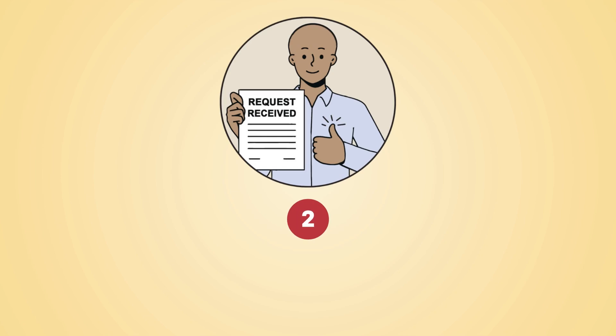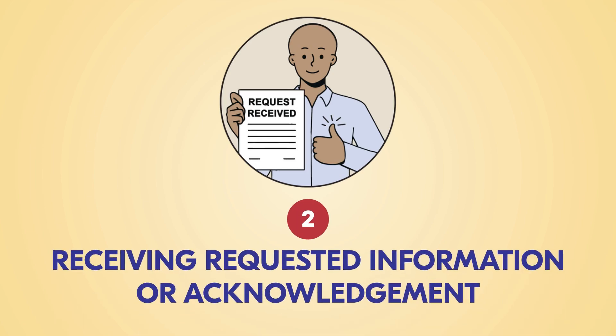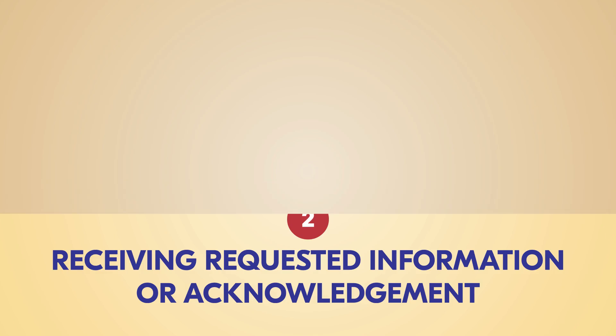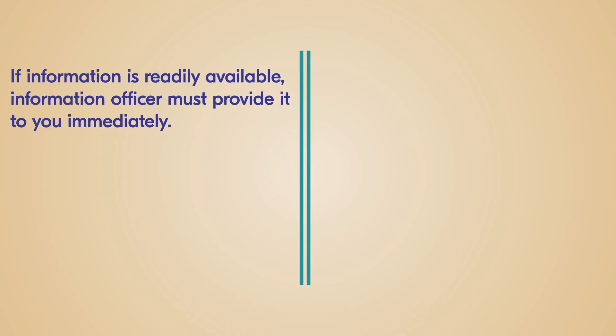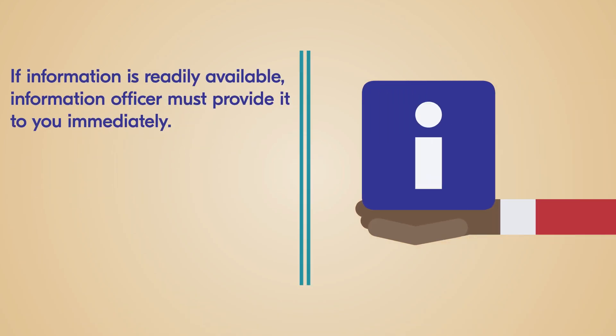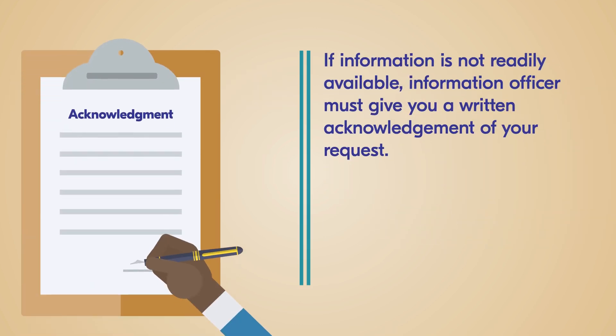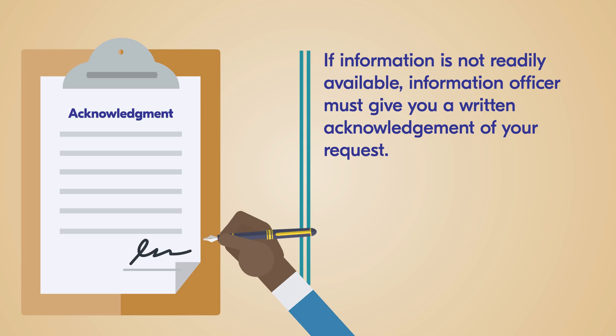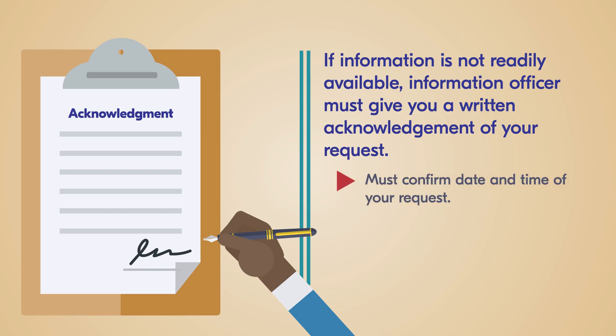Step two: receiving the requested information immediately or getting a written acknowledgement. If the requested information is readily available, the information officer must provide it to you immediately. If it is not readily available, the information officer must give you a written acknowledgement of your request. It's important to have an acknowledgement confirming the date and time of your request.